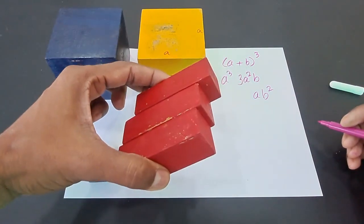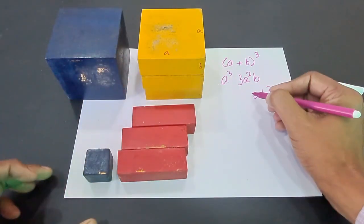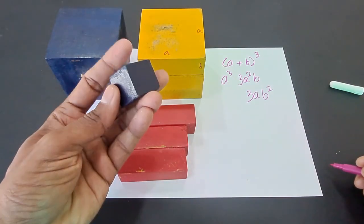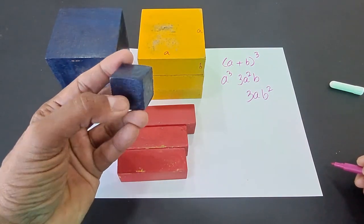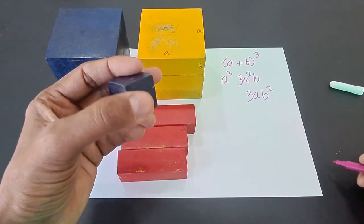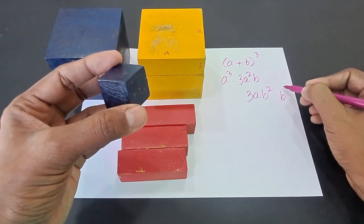We have three such cuboids, and therefore the volume will be 3ab². And finally we have this small cube. The edge of this small cube is b, and therefore b times b times b is the volume, that is b³.